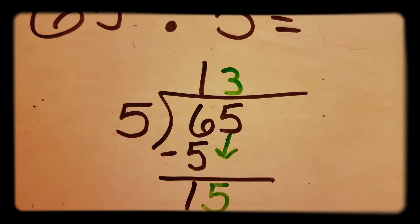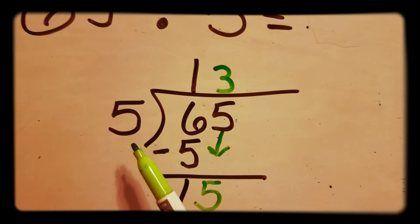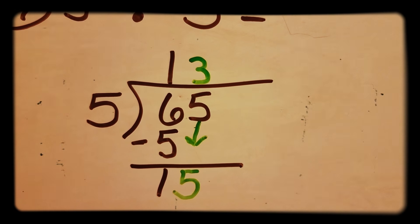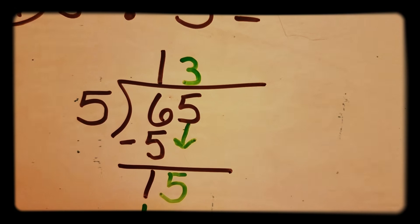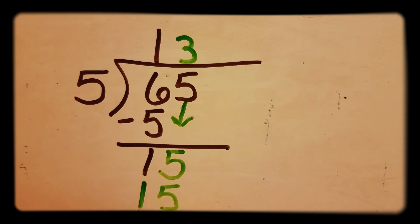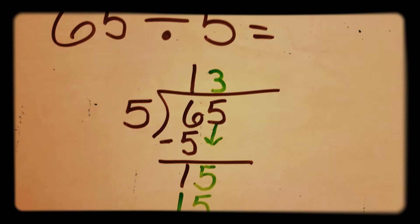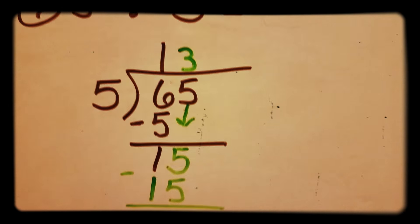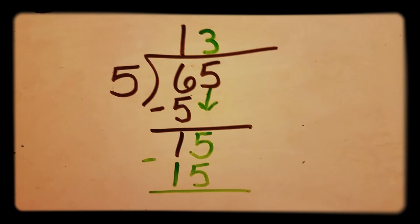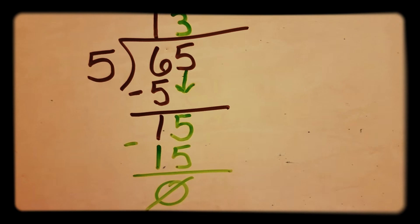Now you want to multiply again. 5 times 3 is 15. And now you want to subtract. 15 minus 15 is 0.